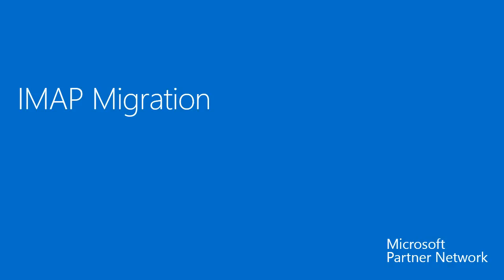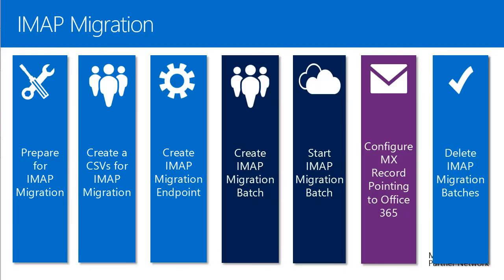Now let me describe the IMAP migration and its differences from cutover. The general IMAP migration process is pretty much the same as cutover. The key difference is that we create a migration batch or multiple migration batches, which handle the synchronization. Since you can run multiple batches, you can schedule the migration to move groups of users. You then change the MX records to point to Office 365, which performs the actual switch to cloud infrastructure.